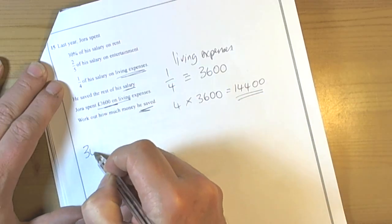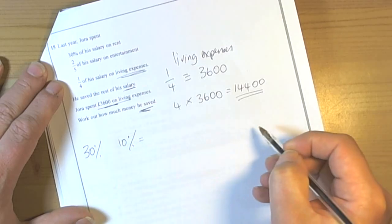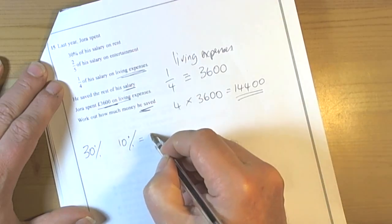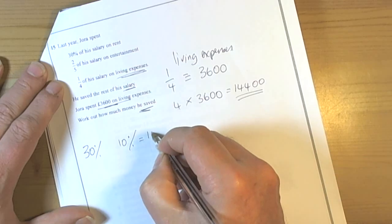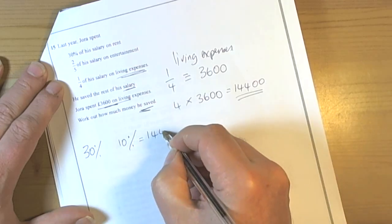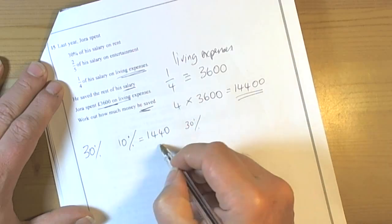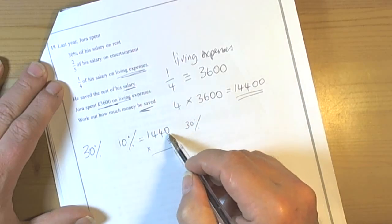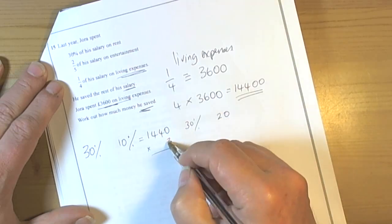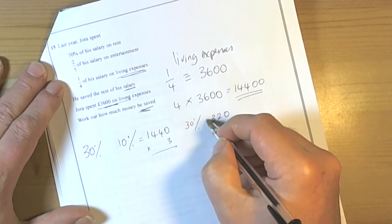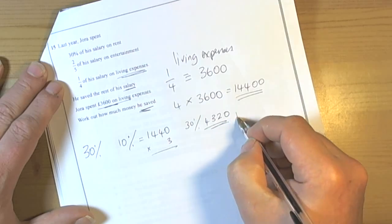So let's have a look at that method. So 30%, well it's a non-calculator paper, so a lot of people might do 10% first. And if we look at this, 10% means we're dividing by 10, so we move this number down one place value, so we get £1,440. 30% must be 3 times this, so if we think of multiplying this by 3: 0, 4 times 3 is 12 carry the 1, 4 times 3 is 12 add on the 1, 1 times 3 plus the extra 1. So we've spent £4,320 so far on rent.